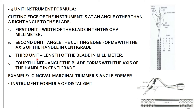The third unit in the four-unit formula is the length of the blade — for the GMT, this is 8 mm. The fourth unit is the angle between the blade and the long axis of the handle, which for the GMT is 14 centigrades. Remember: the fourth unit must always be less than 50, and the same applies to the third unit of the three-unit formula. The second unit is always more than 50.